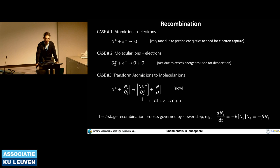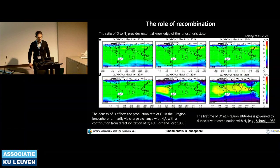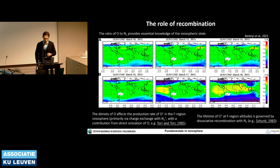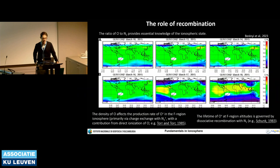Recombination plays an important role. It can be so slow that it allows the ionosphere to exist also during nighttime, when the main source of its creation is not present. The ratio of oxygen to N₂ provides essential knowledge of the ionospheric state, because the oxygen density affects the production rate in the F region and the lifetime of F-region oxygen is governed by dissociative recombination with N₂. To understand the chemistry, you must monitor the ratio between oxygen and molecular nitrogen.